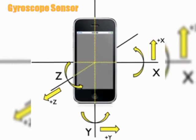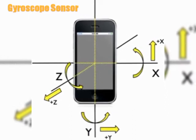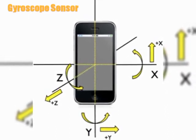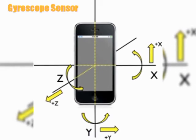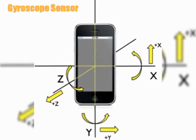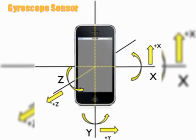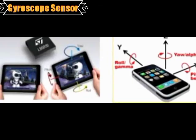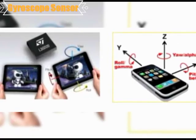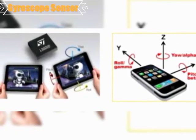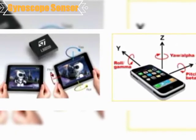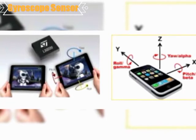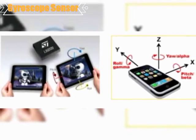The gyroscope sensor adds an additional dimension to the information supplied by the accelerometer by tracking rotation or twist. An accelerometer measures linear acceleration of momentum, while a gyroscope measures angular rotational velocity.